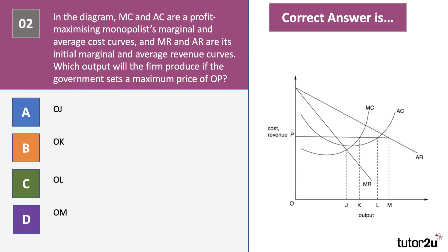Question two is a diagram question and it refers to maximum prices, price capping in a monopoly. In the diagram on the right hand side, MC and AC are the profit maximizing monopolist's marginal and average cost curves. MR and AR are the initial marginal average revenue curves. Now which output will the firm produce if the government sets a maximum price of OP? Press the pause button if you need to take a moment or two to have a think and a go at this question.